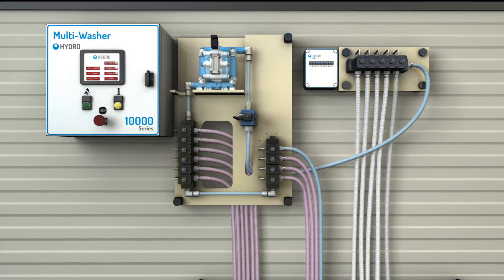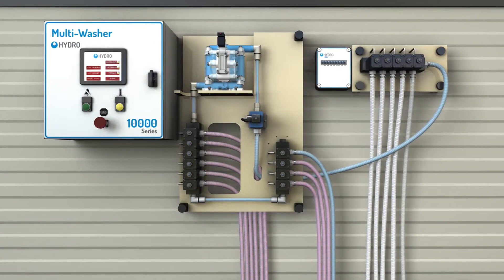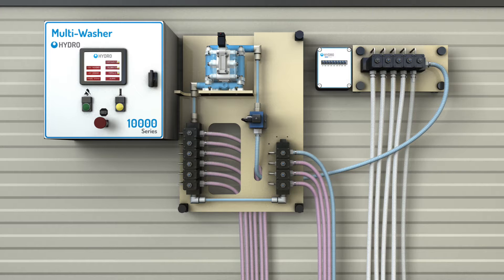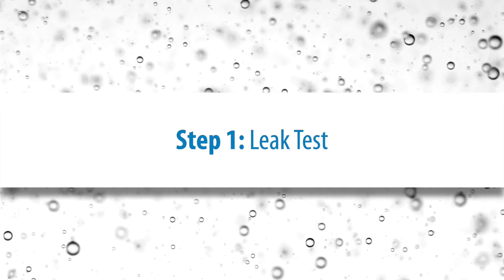Let's take a look at the dosing sequence for the central dosing laundry dispenser from Hydro Systems Company. Step 1: leak test.